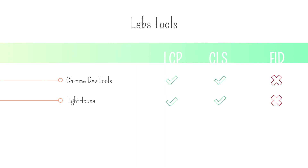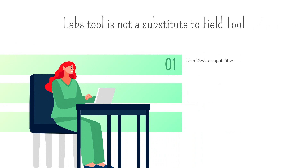So why can't labs tools calculate FID? FID is the First Input Delay — the user must interact with your page to retrieve this measure. It's important to understand that labs tools are not a substitute for field tools for FID.